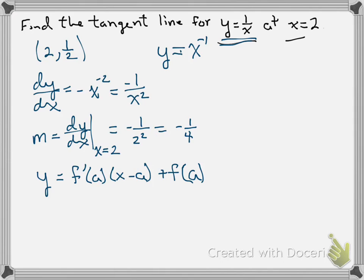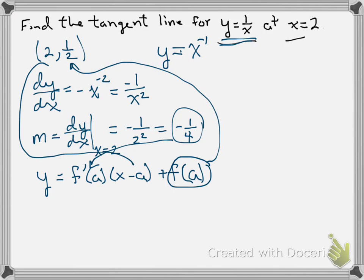Now we didn't call our function f, but f of a is the y value, so that was the 1 half. The negative 1 fourth is our slope, and then 2 here is our a. So what that's going to look like is negative 1 fourth times x minus 2 plus 1 half.